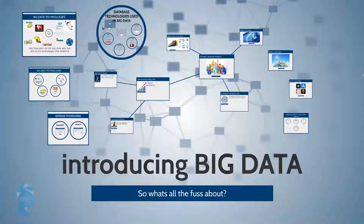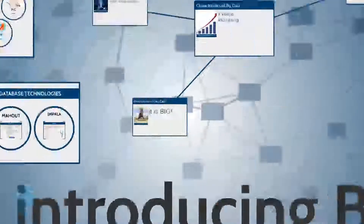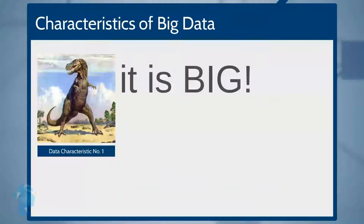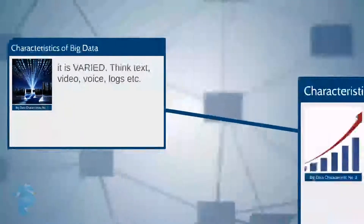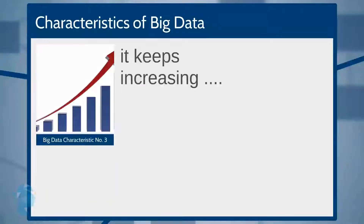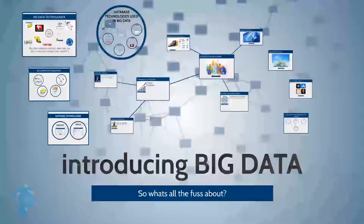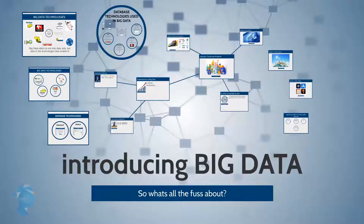What is big data? In simple terms, big data is any data that has three characteristics. First, it is big — typically in terabytes or even petabytes. Second, it is varied — it could be a traditional database, video data, log data, text data, or even voice data. Finally, it keeps increasing as new data keeps flowing in.